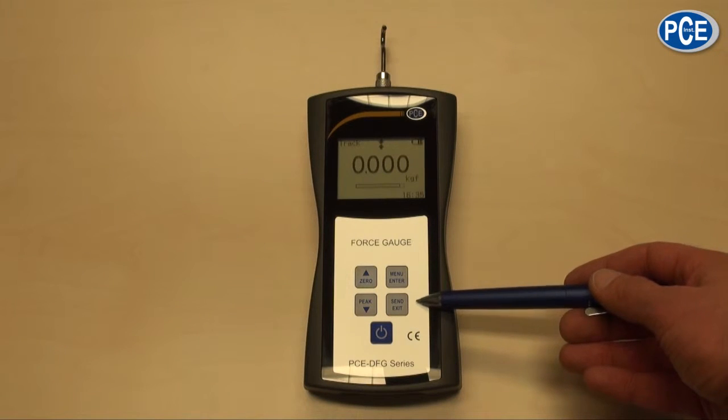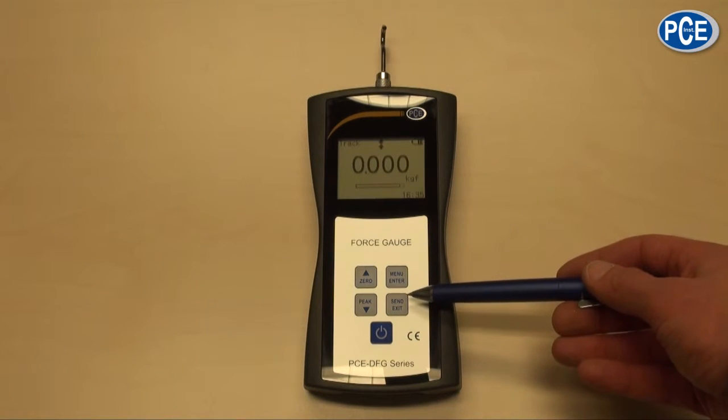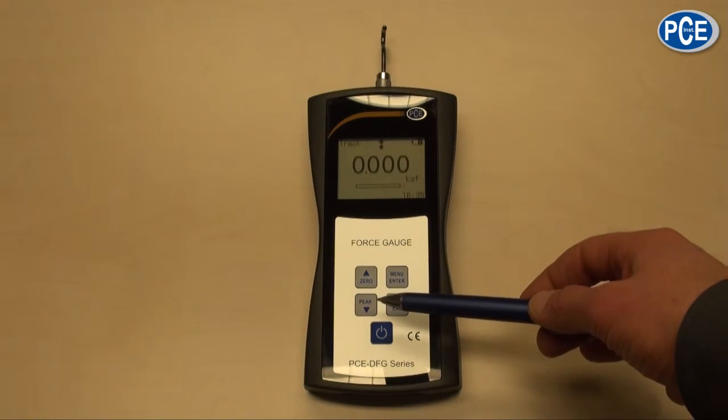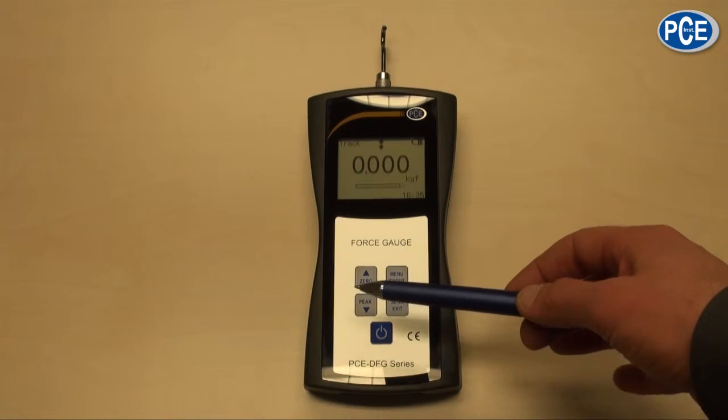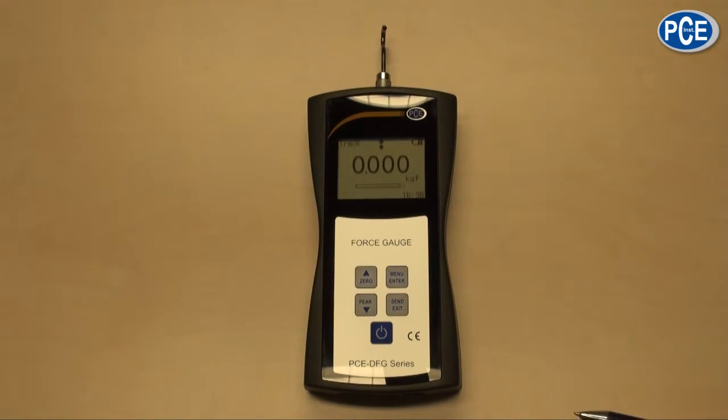The send-exit button saves the data in measuring mode and in the menu you jump one position back. With the peak button or arrow down button you can switch during the measuring back and forth, and in the menu jump one point down.